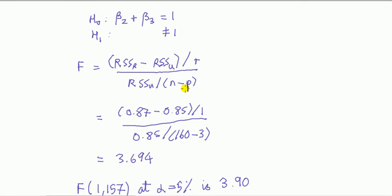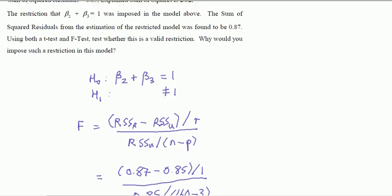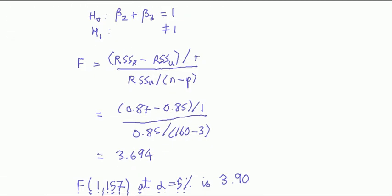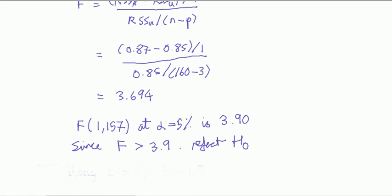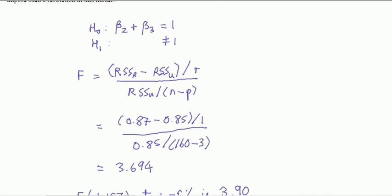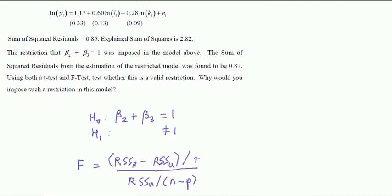If we're doing the test at the 5% significance level—it doesn't say, but in econometrics we usually just do at the 5% level—the critical value is 3.9. You're looking up in an F table for degrees of freedom: the numerator is one and the denominator is that figure. So F equals 3.694, which doesn't exceed 3.9, so we fail to reject the null hypothesis that the two slope parameters add to one.